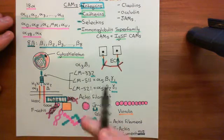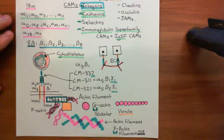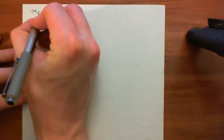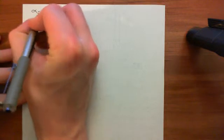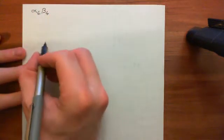Now we want to discuss the final integrin which doesn't bind to actin but instead binds to intermediate filaments, because this is actually very important in these basal keratinocytes. This is the alpha-6-beta-4 integrin — its alpha-integrin is alpha-6, its beta-integrin is beta-4.